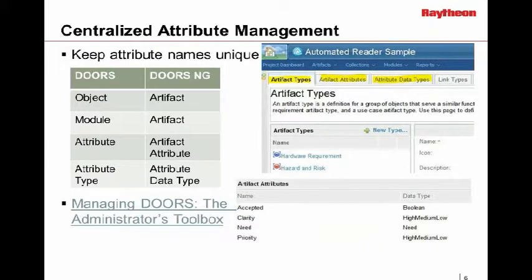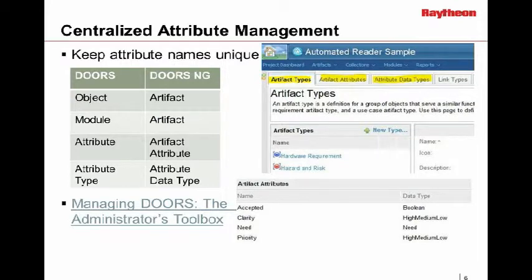One of the other things you're able to do in DOORS Next Generation is have a centralized location within your project to define what types of artifacts and attributes you're going to have. The concept of attributes is very similar. In DOORS 9, you have an attribute that you define for that module — for example, verification method. Whether you're using DOORS Classic, which is DOORS 9, or DOORS Next Generation, verification method — the method by which you're going to verify that requirement — is one I certainly recommend you put into the database.